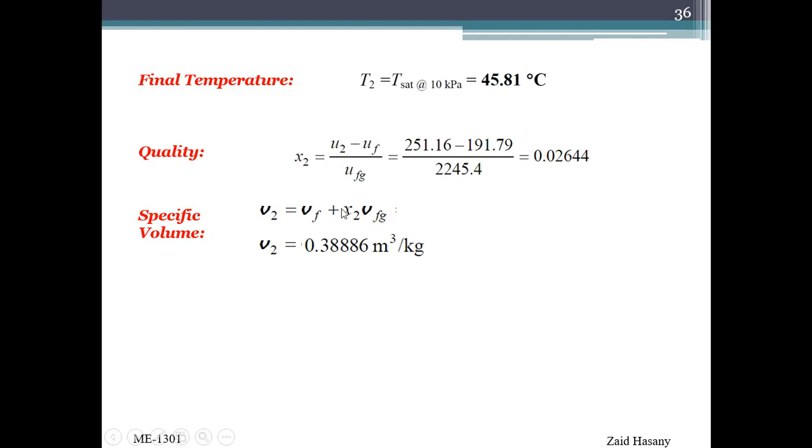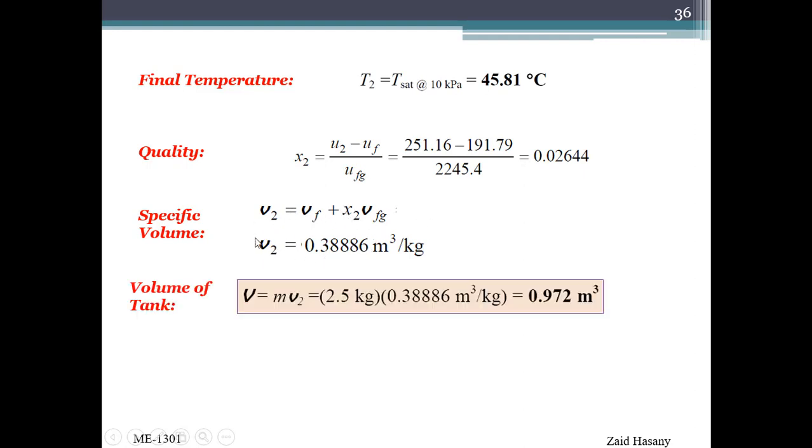Now x2 is used to find the specific volume. V2 equals vf plus x2 times vfg for the final state. In the final state, with 2.5 kg mass, the total volume of the tank is 2.5 times v2, which gives 0.972 m³.